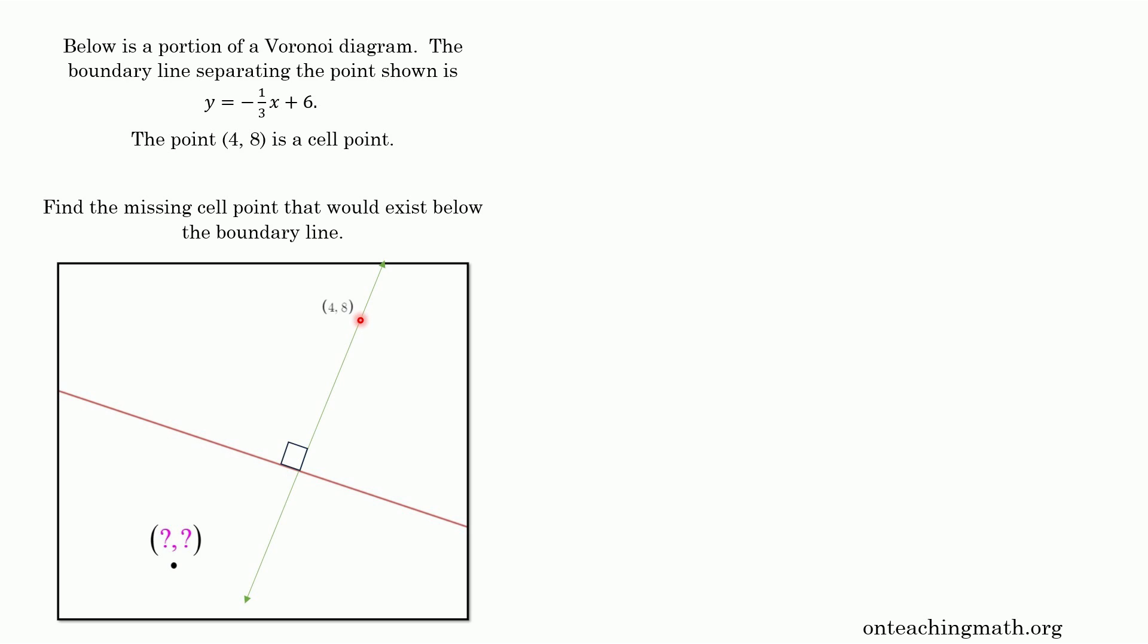So our cell point is somewhere down over here. There's a line connecting this existing cell point with the one down there, and it's going to be perpendicular to the boundary line, which is shown right here, the negative one third x plus six. So our point actually won't be over here. It's going to be a little bit further to the right over there.